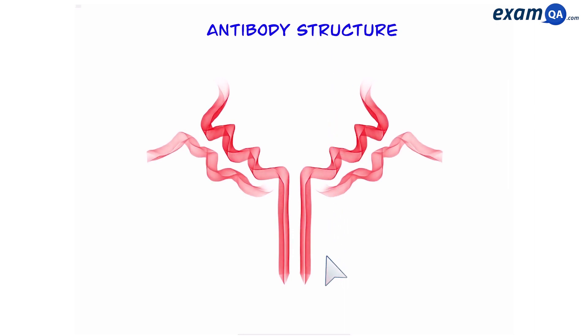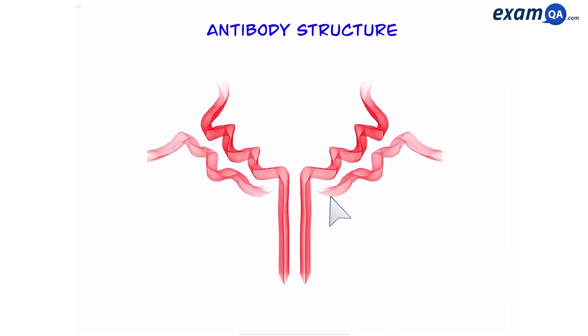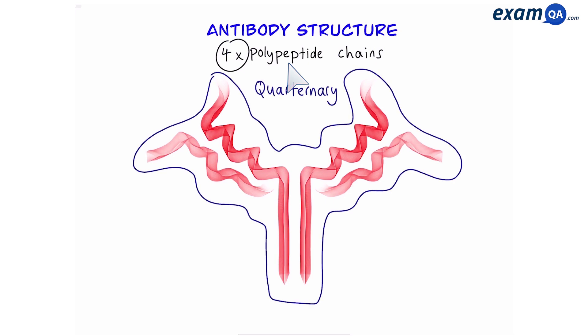An antibody is a protein which looks like this. It has two heavy chains and two light chains. The heavy chains are made of more amino acids that are joined together, hence why they are longer and called heavy. So in total we have four polypeptide chains that are joined together. This means an antibody has a quaternary structure.